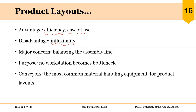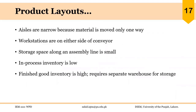In contrast to process layout, efficiency is high in product layout and utilization of labor and equipment is very high, though the disadvantage is inflexibility — each line is dedicated to a specific type of product. The major concern in product layout is balancing the assembly line so that no workstation becomes a bottleneck. The time spent at different workstations should be almost identical. The most common material handling equipment for product layout is conveyors, and aisles are narrow because material moves only one way.